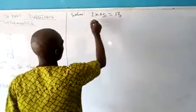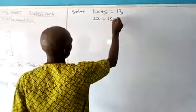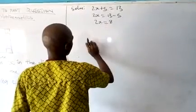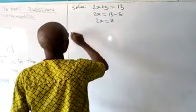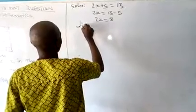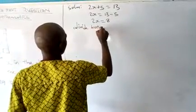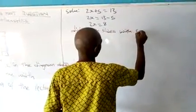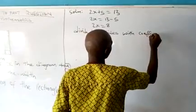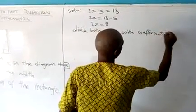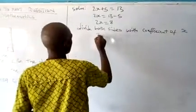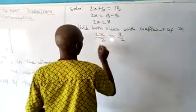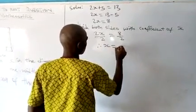So we can equate it this way. Then we collect our like terms. We say 2x equals 13 minus 5. 2x equals 8. If we divide both sides with the coefficient of x, which means 2x over 2 equals 8 over 2. Therefore, x equals 4.